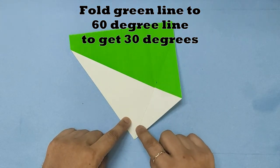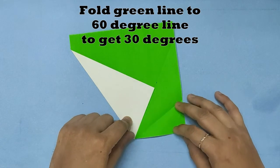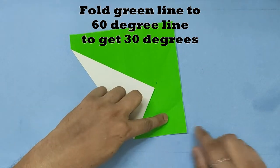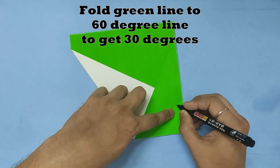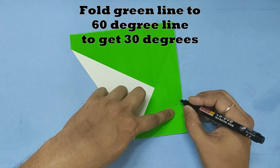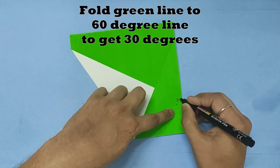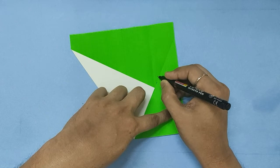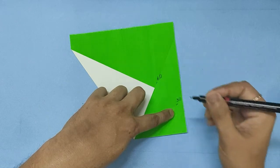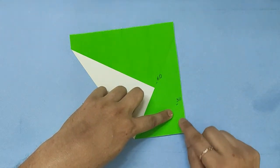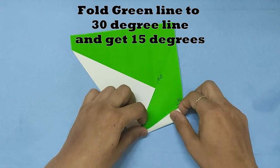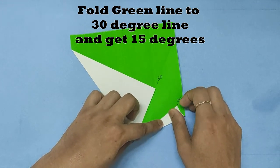So 60 plus 30 will be 90. That is the 30 degree line. That's the 60 degree line. Now we will bisect the 30 degrees to get 15 degrees.